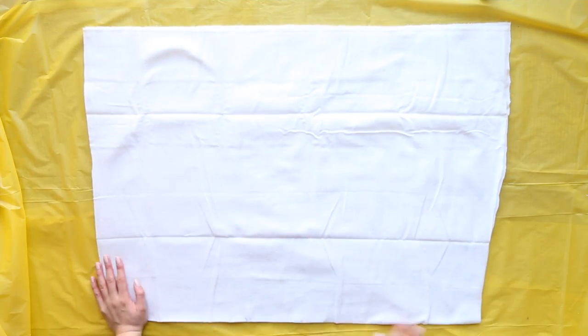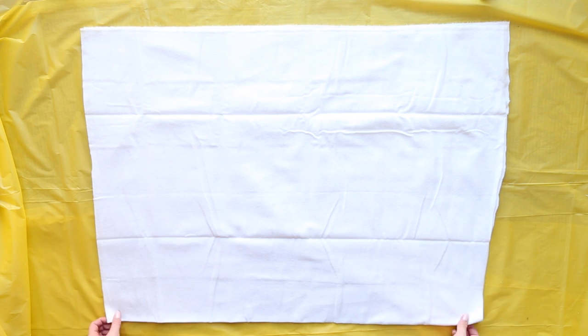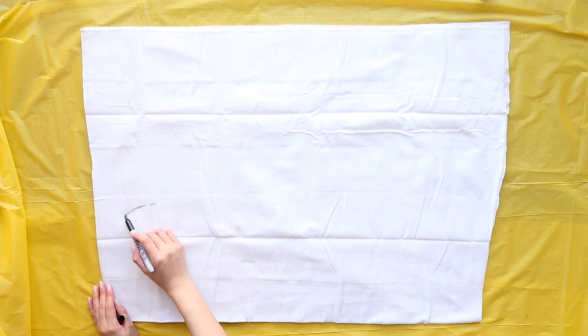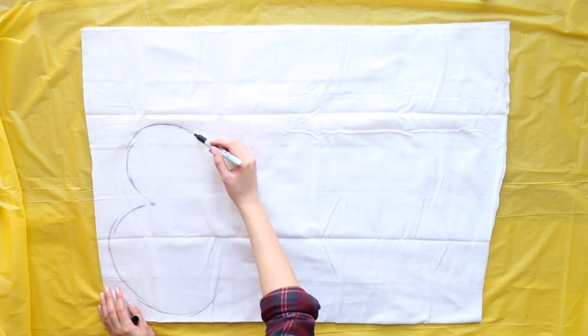Start off with two sheets of white flannel and layer them flat, one on top of the other. Next, take a sharpie and draw out your cloud shape.